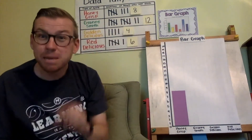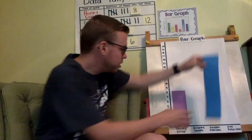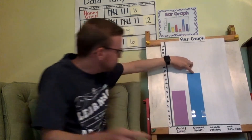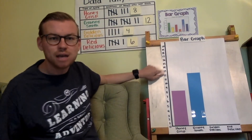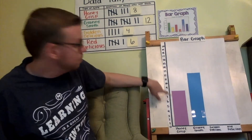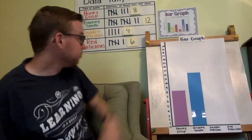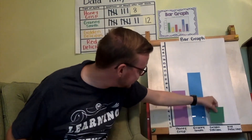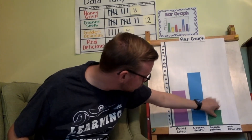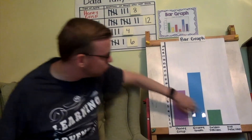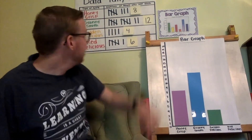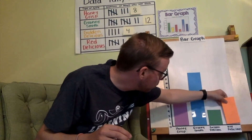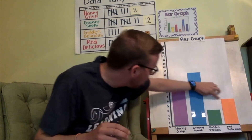For Granny Smith, twelve people liked it — that's a lot. So I have a bar that goes all the way up to twelve. For Golden Delicious, just four people liked it, so I have a little bar that goes right above Golden Delicious and hits right at four. And then finally, Red Delicious had six people, so I have a bar that hits right on six.